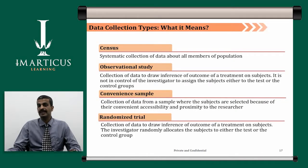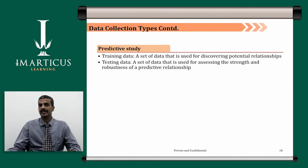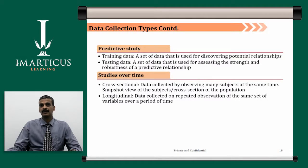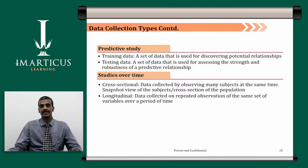We are going to see these topics more in detail when you start actual predictive modeling. You will cover this under data science and then see its practical implementation under predictive modeling in tools like SAS, R, or Python. Then we have predictive study data which includes training data and testing data. Training data is a set of data used for discovering potential relationships, and testing data is a set of data used for assessing the strength and robustness of a predictive relationship. Data collected by studies over time can be cross-sectional or longitudinal. In cross-sectional data, many subjects are observed at the same time — a snapshot or cross-section of the population. Longitudinal data is collected on repeated observation of the same set of variables over a period of time.